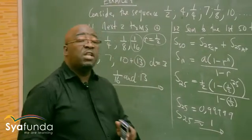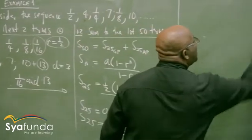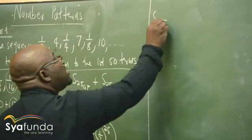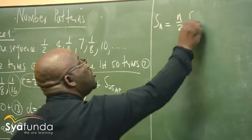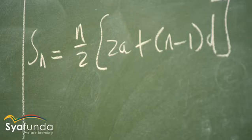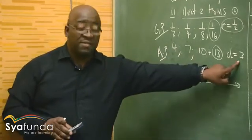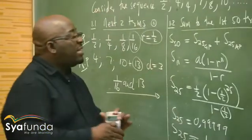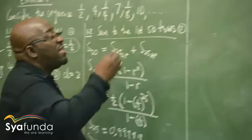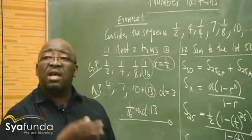Remember, we're not looking for just the sum of the first 25 — we need 50. So that's our geometric sequence done. Now let's find the sum of the first 25 terms of the arithmetic sequence. Go to your formula sheet and pick up the formula: Sn = n/2 × (2a + (n−1)d). This is for the arithmetic progression. I know the first term and the common difference.